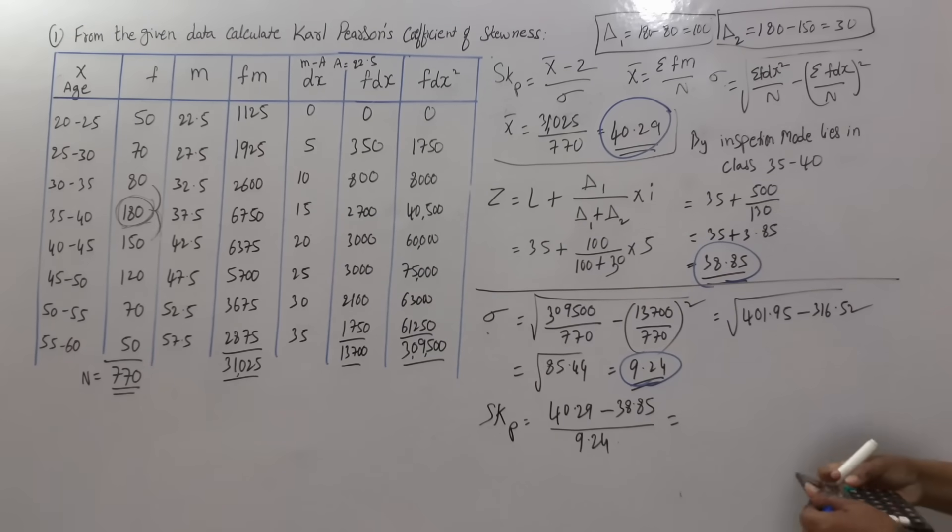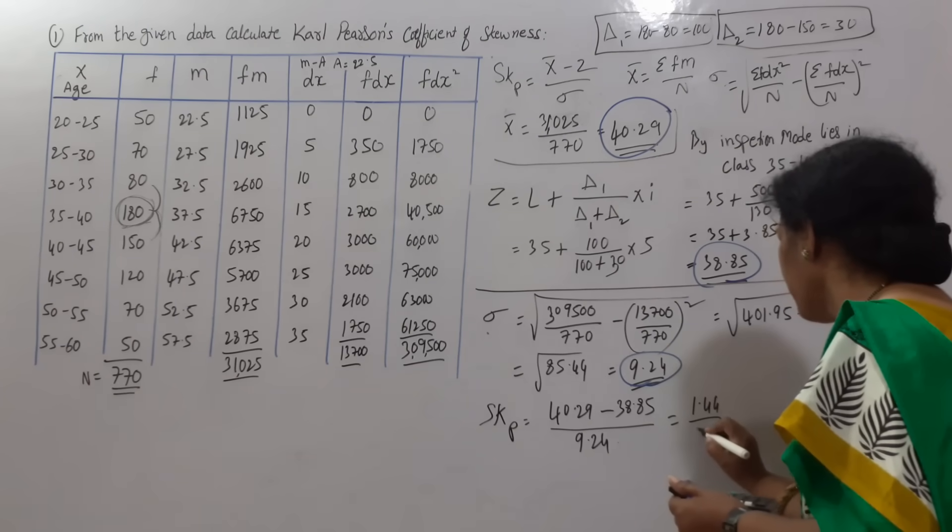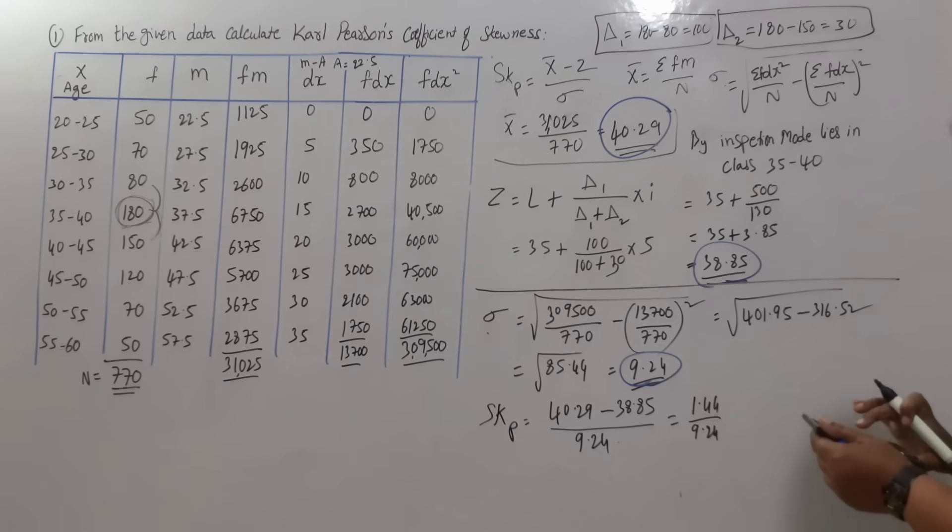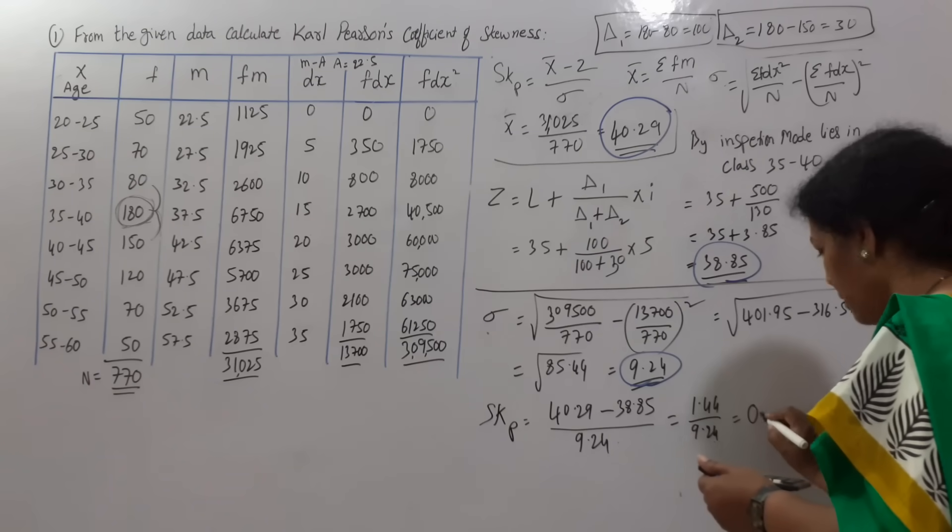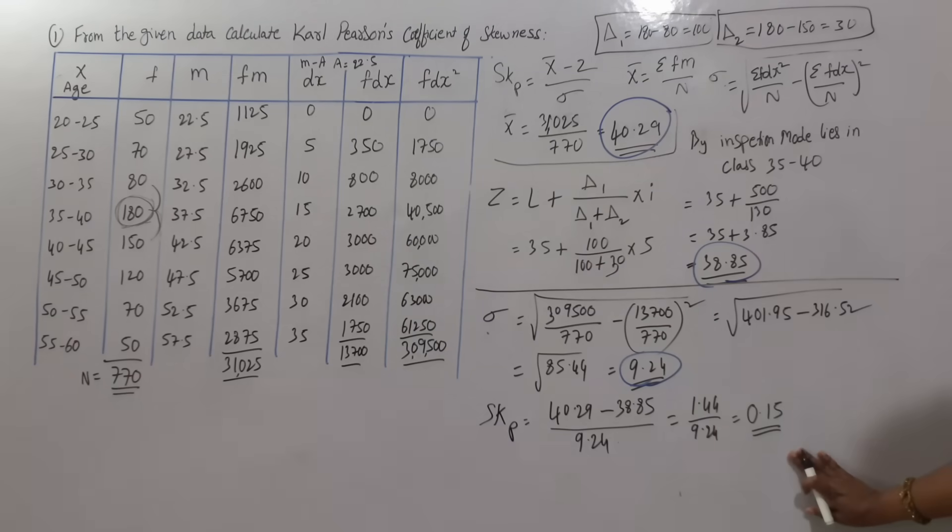Now let us do the calculation. 40.29 minus 38.85 comes to 1.44. 1.44 divided by 9.24 means 0.15. Answer is 0.15.